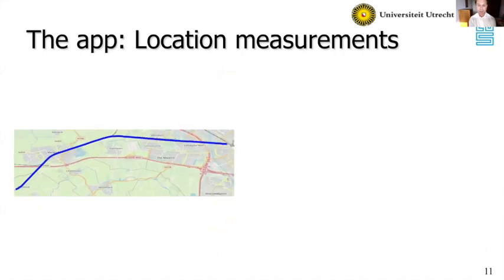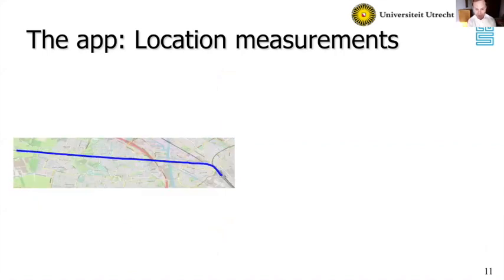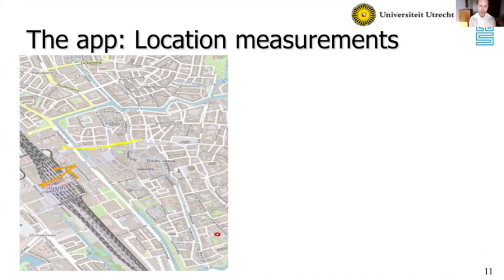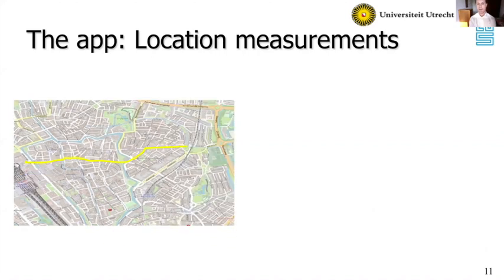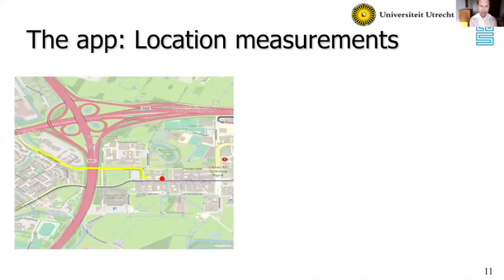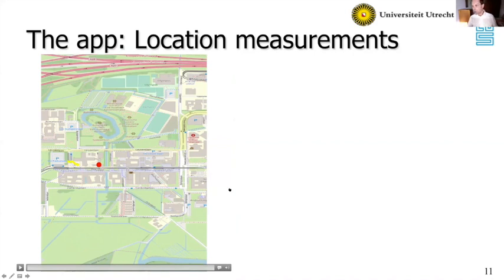You can see someone arriving at Utrecht Central Station, then the trip continuing — the colors of the lines reflect the different parts of the trip as we identify them — and then arriving at their destination. This is just one trip, but these are the data that come in automatically with the app. The idea was to use this data to populate a diary: if we know the time people start and end a trip and where they go, we can use these data to fill in the diary automatically.